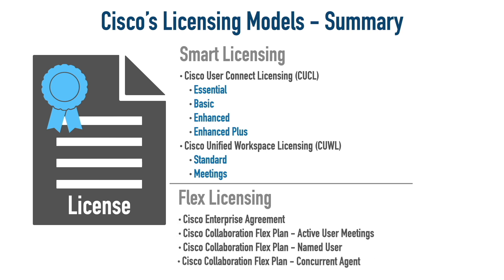If you want to start migrating toward the cloud, consider flex licensing with four types based on how meetings are set up: Enterprise Agreement allows anybody to set up unlimited meetings; Active User Meetings, Named User, and Concurrent Agent offer ways to save money by scoping the license to actual or peak usage. And that's a look at the smart licensing and flex licensing options for Cisco Unified Communications.